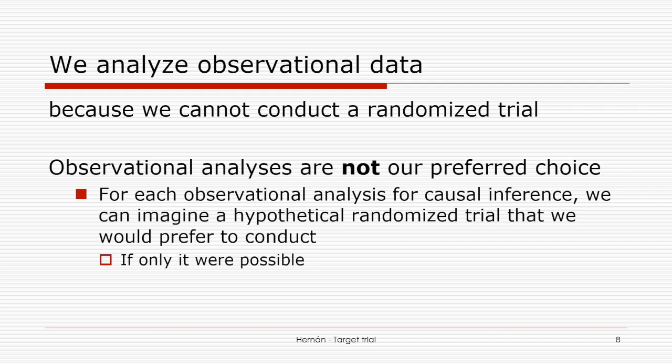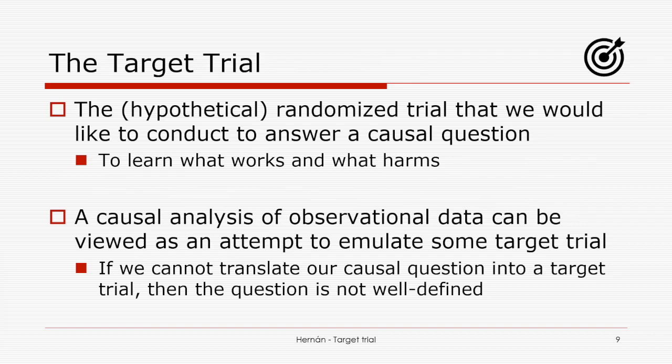For each causal inference question about effectiveness or safety, we can imagine the hypothetical randomized trial we would prefer over our observational data. For any question we want to answer, we can ask: what randomized trial would we like to conduct if possible? That trial — which may be purely hypothetical — is the target of our inference. We refer to it as the target trial: the hypothetical randomized trial we would like to conduct to answer our causal question.